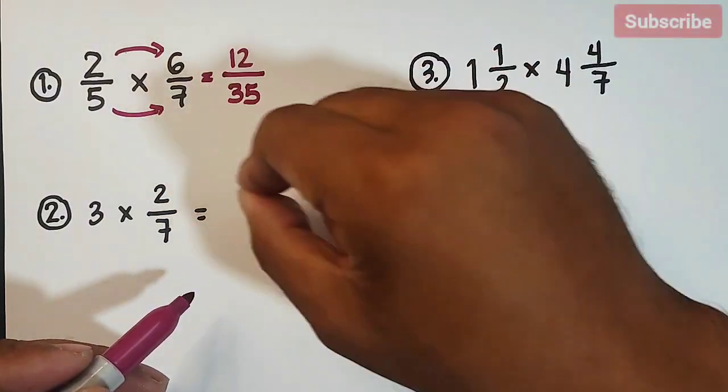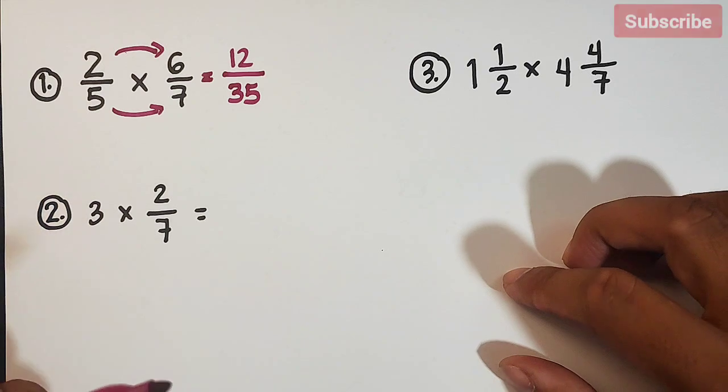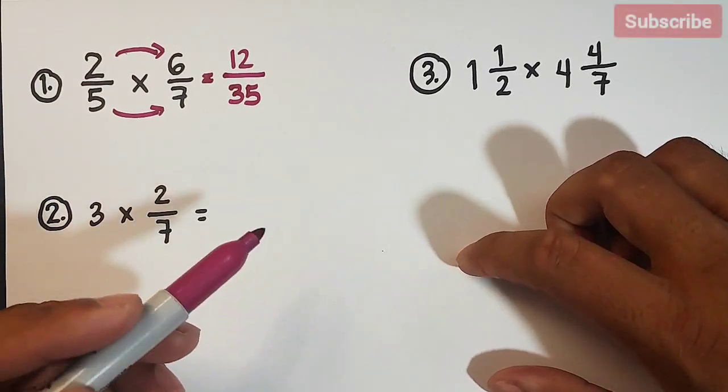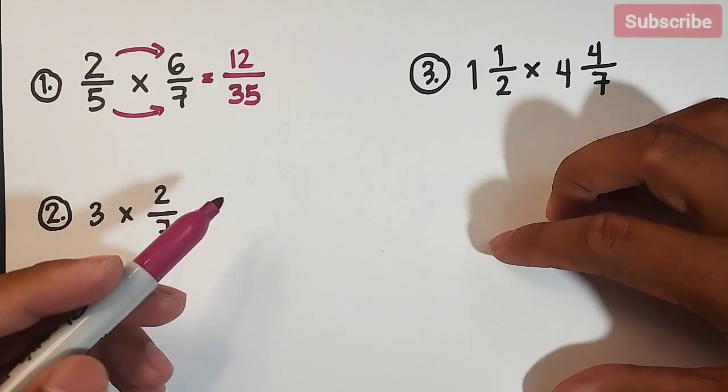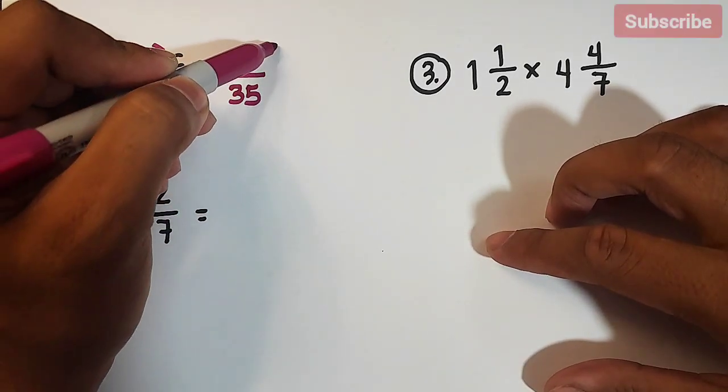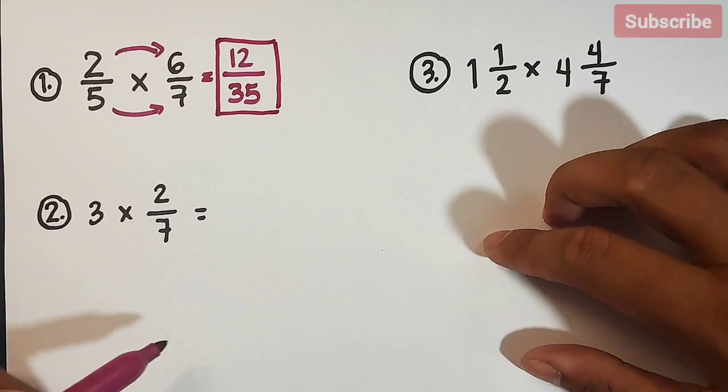After multiplying, you need to think if we can still simplify this fraction. And in this case, we don't have the greatest common factor aside from 1, meaning this fraction is already in simplified form.